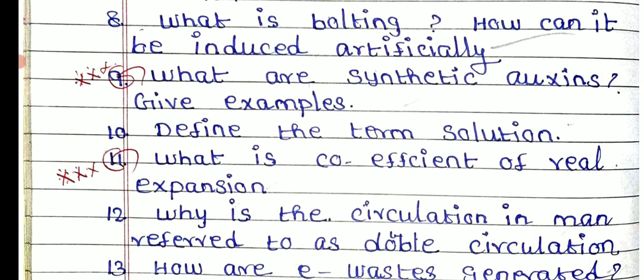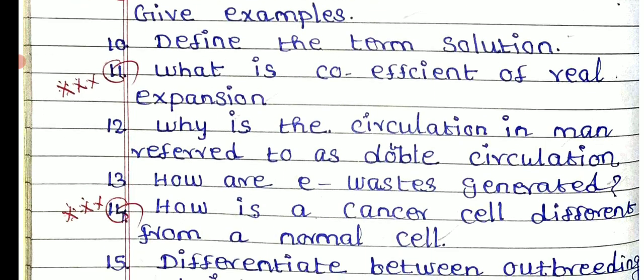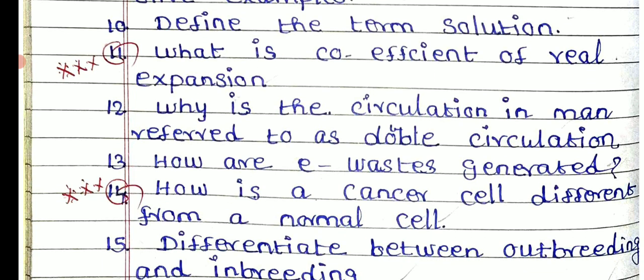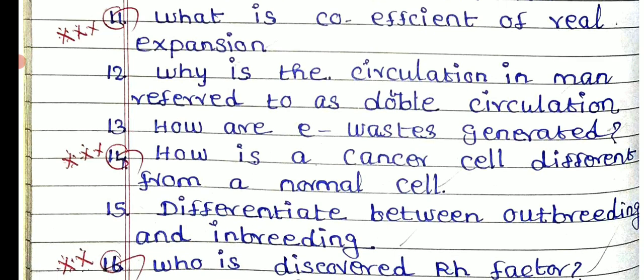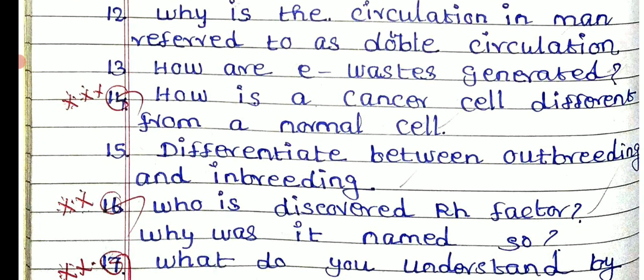Why is circulation in man referred to as double circulation? How is e-waste generated? How is a cancer cell different from a normal cell? What is the difference between out-breeding and in-breeding?